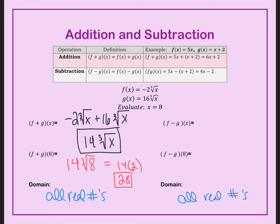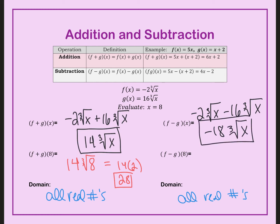Let's try subtracting. I'm going to have negative 2 cube root of x, since f is in front, and this time I am subtracting 16 cube root of x. So, negative 2 minus 16 is negative 18 cube root of x. When we plug in 8, I have negative 18 times the cube root of 8. The cube root of 8 is positive 2, so multiply them and your answer is negative 36.